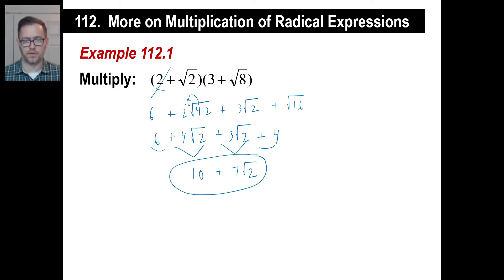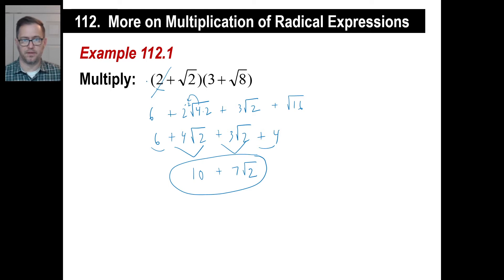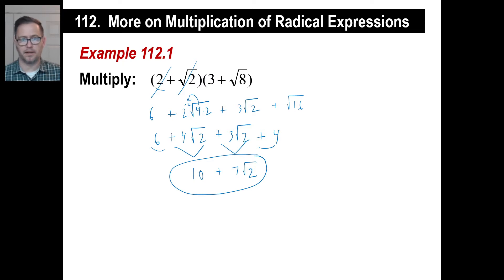And that is it — that's as far as we can go. Same method: you distribute the first term and you distribute the second term, add like terms, boom. The only thing you have to worry about is making sure you simplify any square roots — look underneath and see if you can simplify.